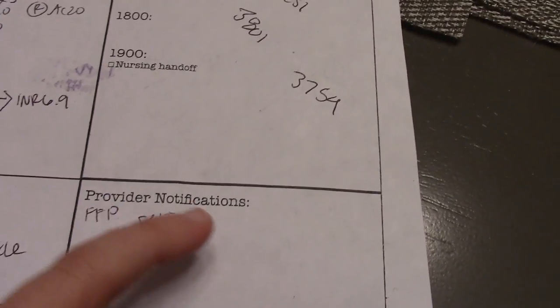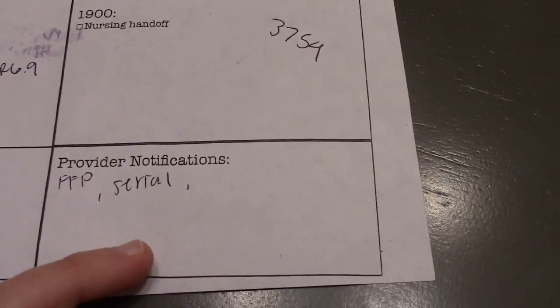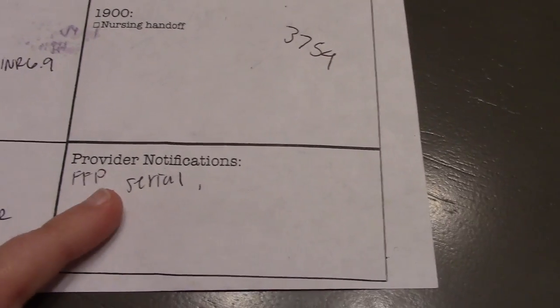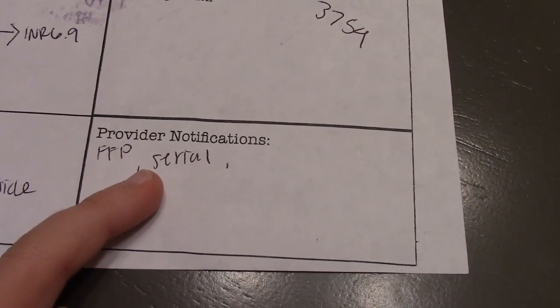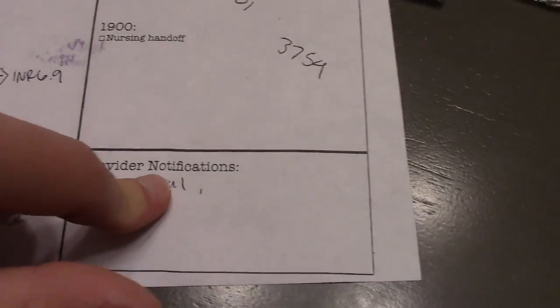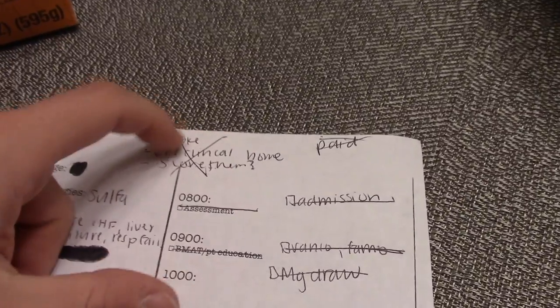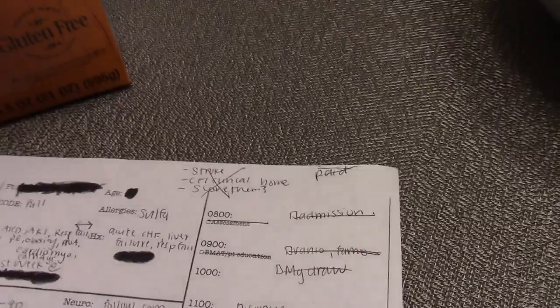Provider notification: this is where I write if I talked to a doctor and haven't charted it yet. I use this off and on depending, but this is something I needed to talk to the doctor about. I write down little code words for things I need to discuss. I needed to talk to the doctor about serial labs. Up here is random stuff I scribbled because I needed to ask one of our educators about it.